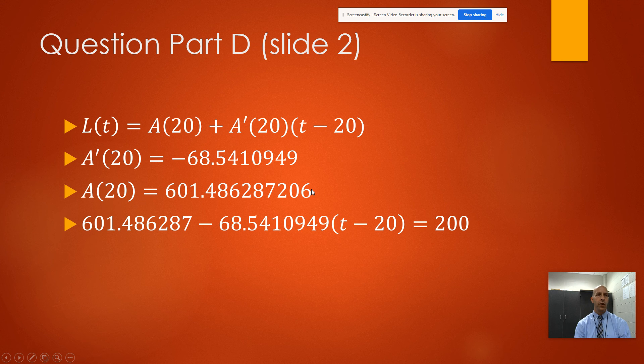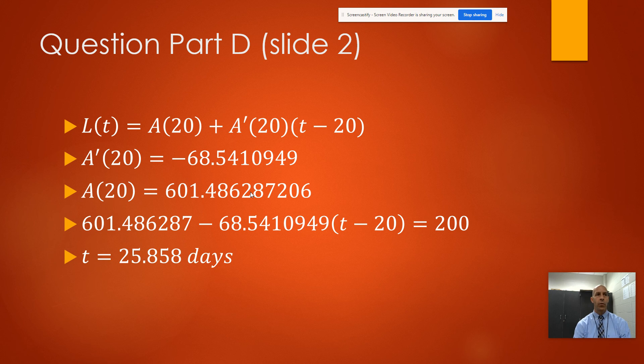Therefore we get 601.486 minus 68.541 times the quantity (t minus 20), and we want to set that equal to 200 because that's what the question is asking us. The result of this turns out to be 25.858 days.